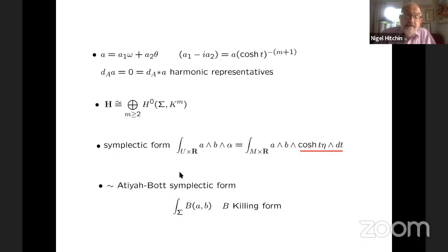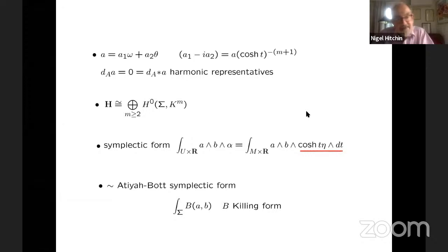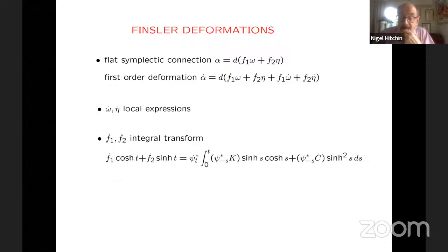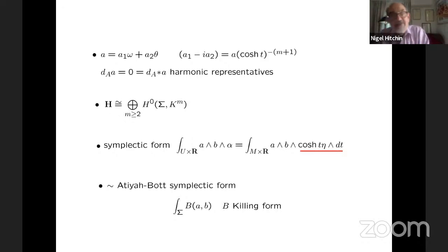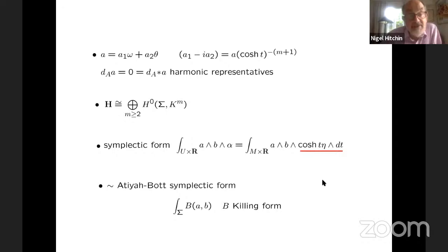In our case the symplectic form is this. So this is the pure analog of the Atiyah-Bott symplectic form, and on this vector space we have a non-degenerate symplectic form. So we have this set of classes inside this cohomology which have the right shape to be a tangent space to an infinite-dimensional version — as N goes to infinity — of the type of spaces that we know. But the question is, what has it got to do with Biquard's structure?